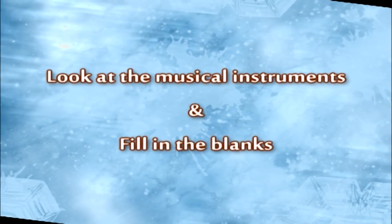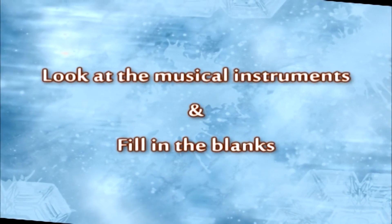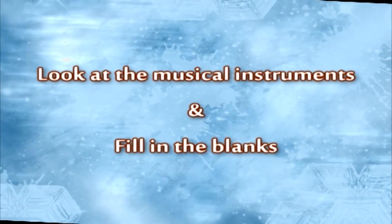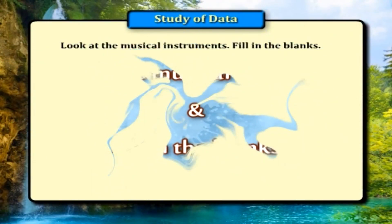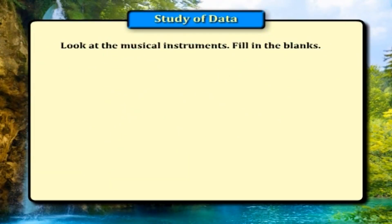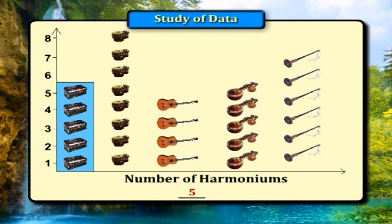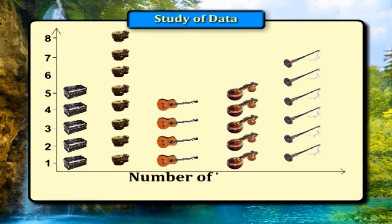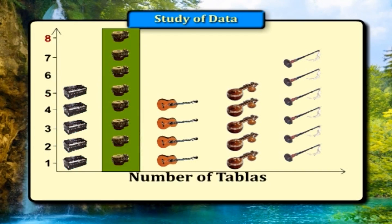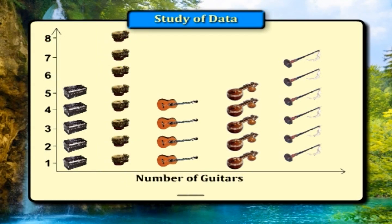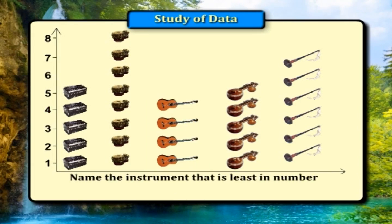Look at the musical instruments and fill in the blanks. Number of harmoniums? Number of tablas? 8. Number of guitars? 4. Name the instrument that is least in number.